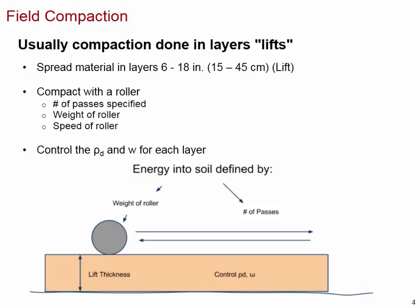We can compare field compaction to the standard Proctor test. In the standard Proctor test, we control the weight of the hammer — analogous to the roller weight — and the number of drops, analogous to the number of passes. The roller speed corresponds to energy per drop. Lift thickness corresponds to the number of layers — three layers in the standard Proctor test. Then we measure total density and water content to calculate dry density.